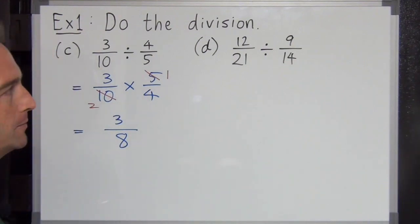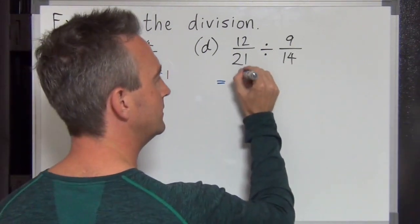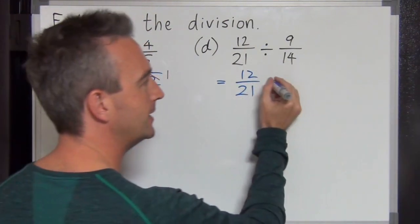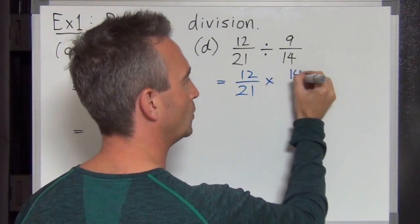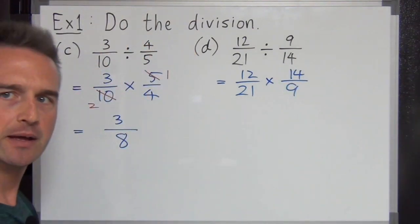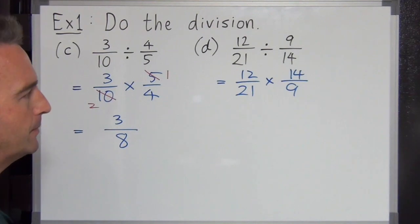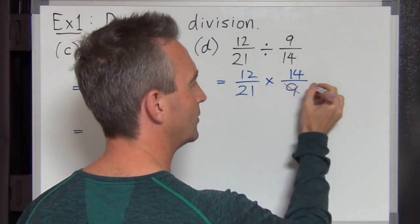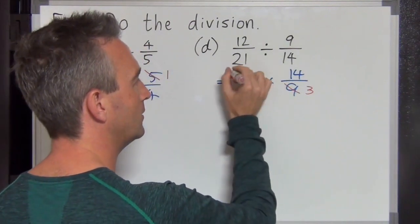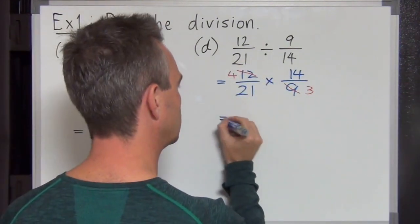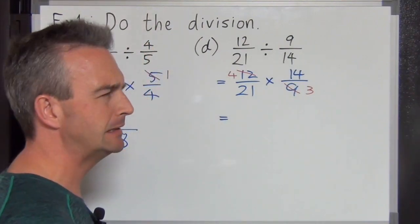One more. 12 over 21 divided by 9 over 14 is going to become times 14 over 9. Can anything cancel this time? Yes I think we can divide by 3. 3 goes into 9 three times. 3 goes into 12 four times. On we go. Equals. 4 times 14 is...